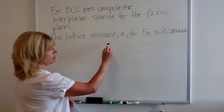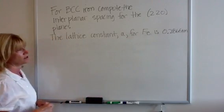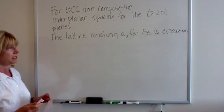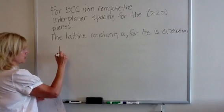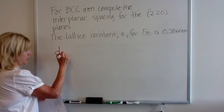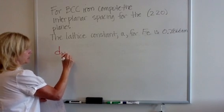The lattice constant can be calculated for iron to be 0.2866 nanometers. So what we need to do is we need to look at the perpendicular spacing between any h, k, l planes.